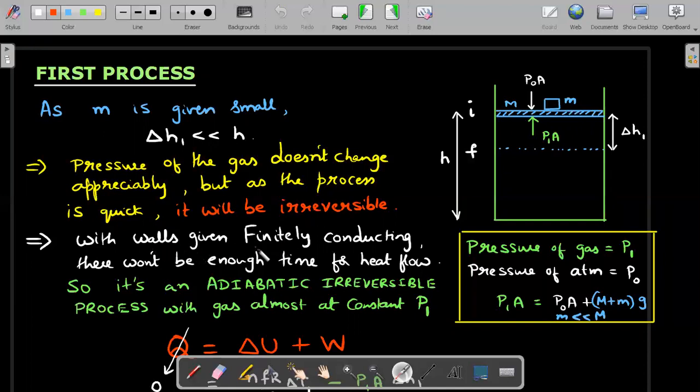Why is it adiabatic? With the walls given finitely conducting, they take some time to conduct heat from outside to inside. There won't be enough time for heat flow to happen. The heat never got time to flow in because of the motion of this particular piston. Work is done on the gas but there is no heat flow from outside, so it makes it an adiabatic but irreversible process with gas almost at constant pressure.